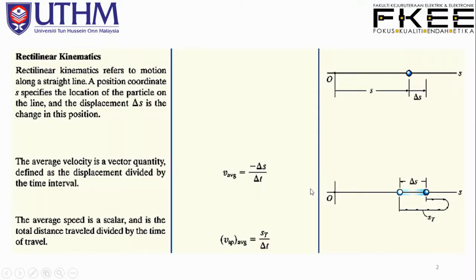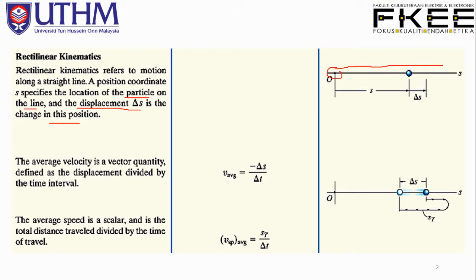These are the rules and regulations on rectilinear kinematics. This refers to motion along a straight line, where a position coordinate s specifies the location of a particle on the line. The displacement Δs is the change in this position from the original location.